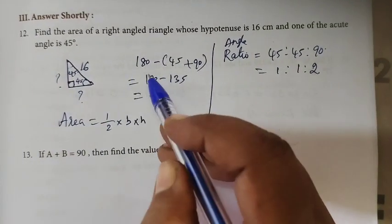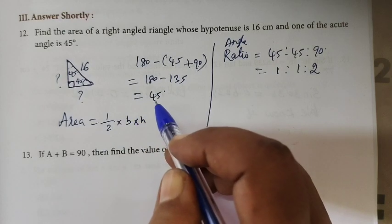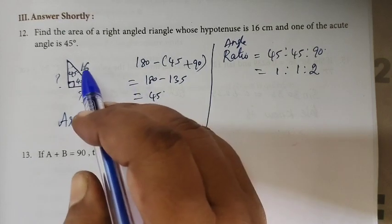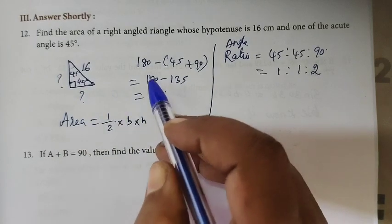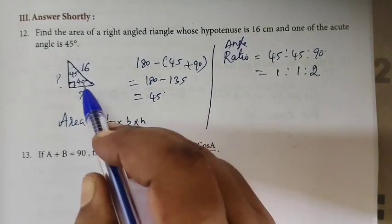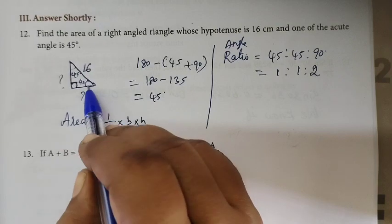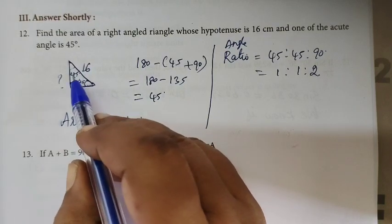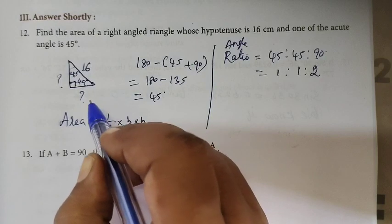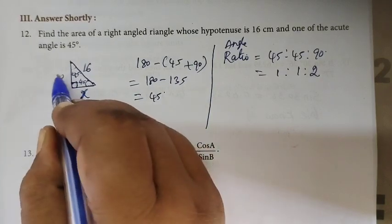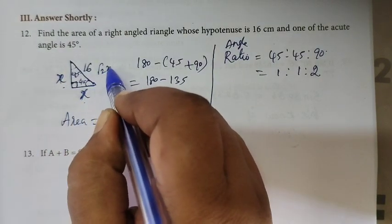Let me explain this. If you have a right angle triangle, one angle is 45 and the other angle is 45. This side is x, this side is x, and the hypotenuse is root 2x.